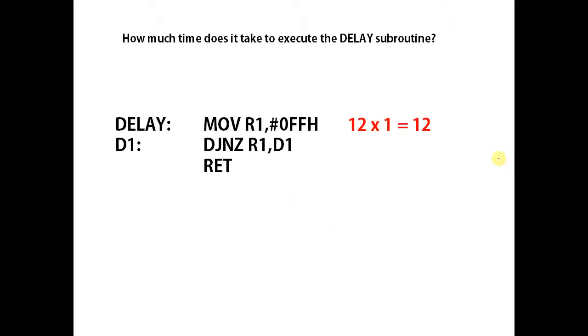The first instruction has a period of 12 and was executed one time. The total period taken to execute the delay subroutine is 12 plus 6120 plus 24. The total of 6,156 oscillation periods was needed.